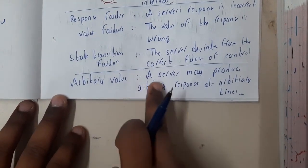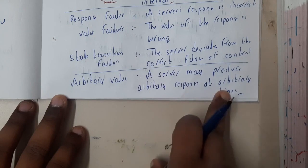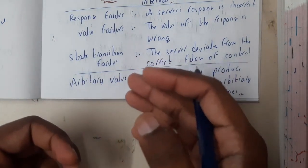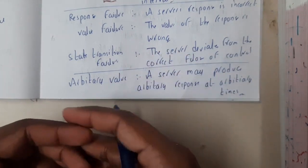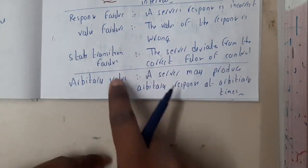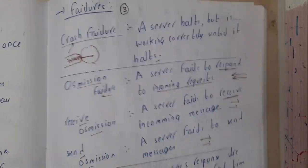Similarly, arbitrary value: a server may produce arbitrary responses at arbitrary times. It's giving multiple values. If you asked first time, it told you x equals 10. There is no update or any kind of operation, and again you asked, it is saying 20. So in that situation, you can say that is arbitrary value. I hope everyone got some basic idea about these failures.